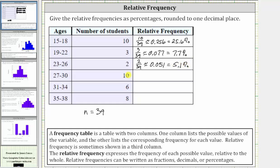Next, there are 10 students with ages 27 through 30, and therefore the relative frequency is 10/39, which we know from above is approximately 0.256, which equals 25.6%.